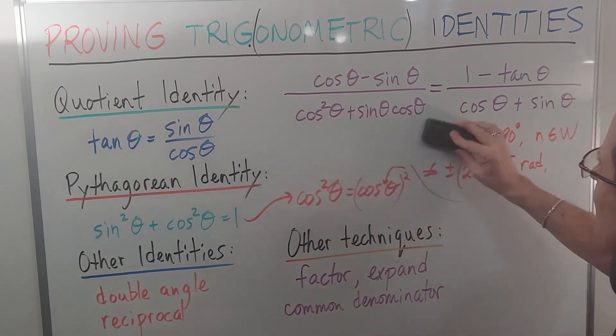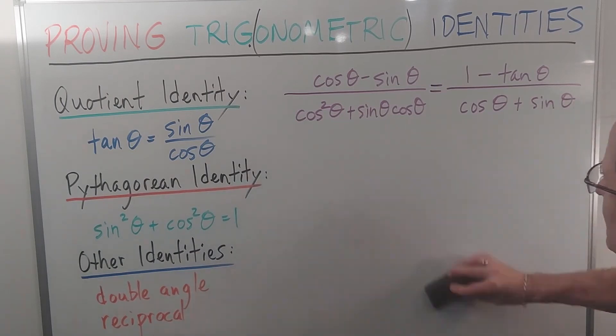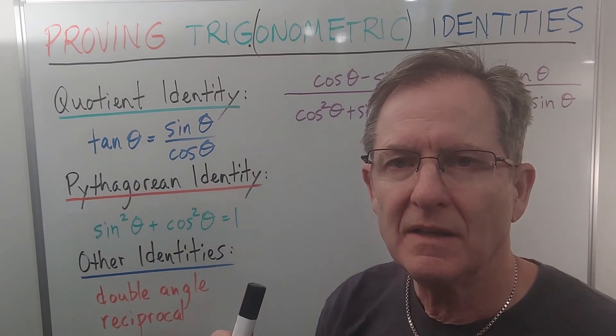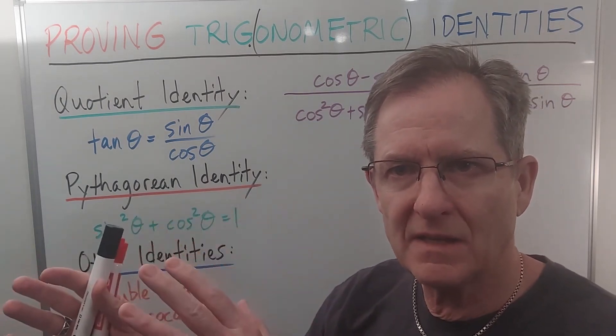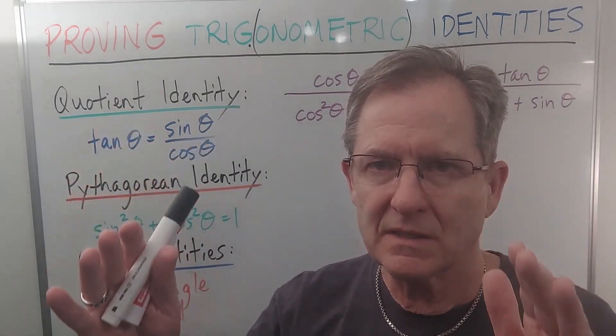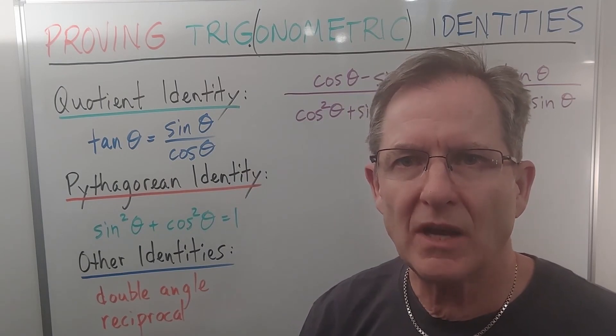Cos θ minus sin θ over cos²θ plus sin θ cos θ equals 1 minus tan θ over cos θ plus sin θ. Now, before we do, generally speaking, teachers will say you can only work on the left-hand side or the right-hand side, or both sides, until you simplify to the same point, so that you can prove they're equal.